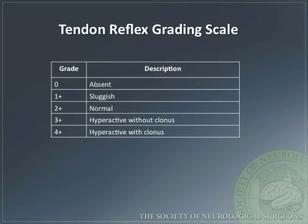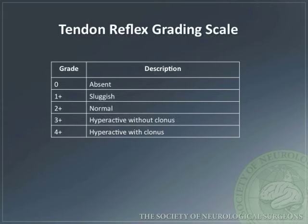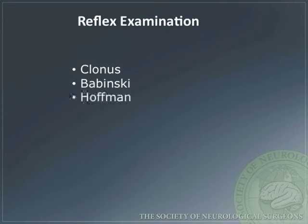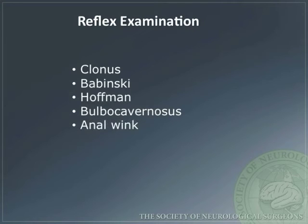Reflexes are graded from 0 to 4+: 0 is absent, 1+ is sluggish, 2+ is normal, 3+ is hyperactive without clonus, and 4+ is hyperactive with clonus. In addition to DTRs, clonus, Babinski, Hoffman, bulbocavernosus, and the anal wink reflexes should be tested in specific patients.